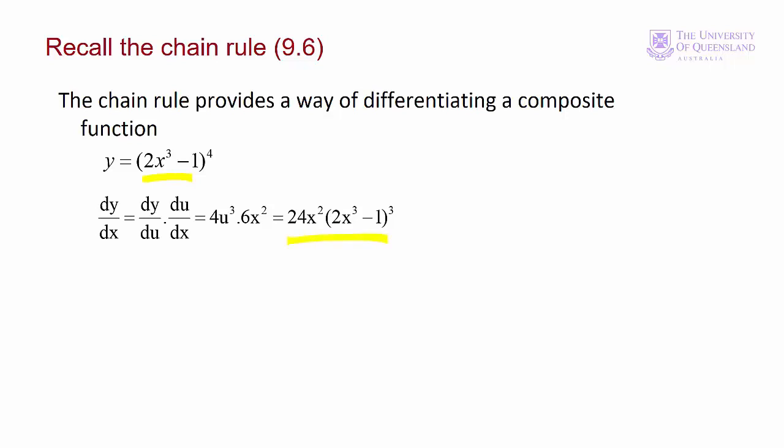Integration is the reverse of differentiation, so if we have an integral of 24x squared times 2x cubed minus 1 to the power 3, then we know it's equal to our original function 2x cubed minus 1 to the power 4 plus c. Let's look at how we do that in a bit more detail.